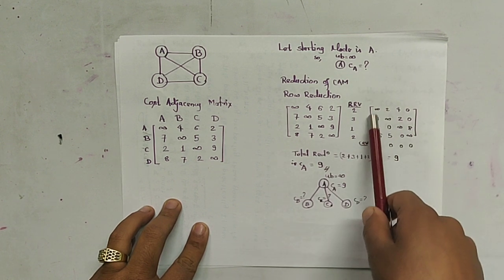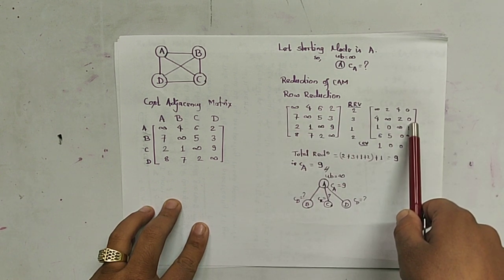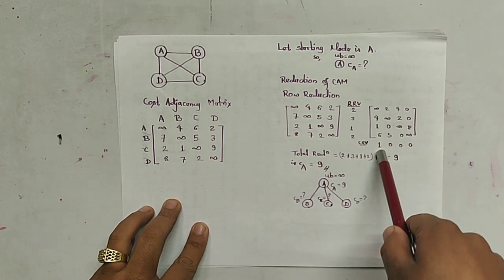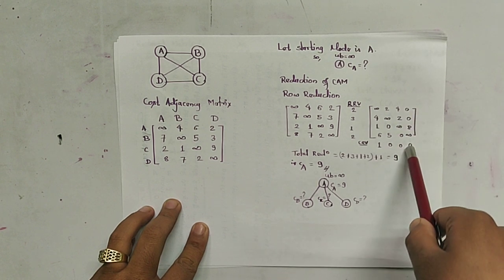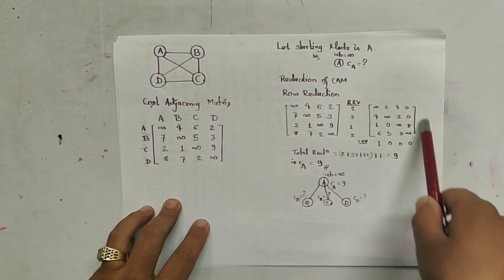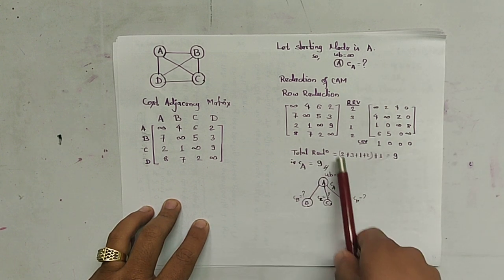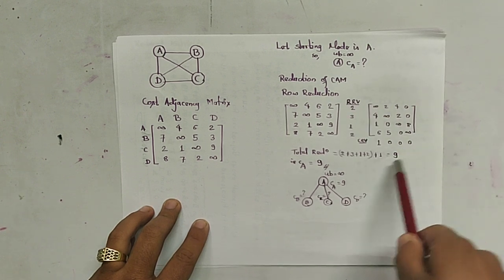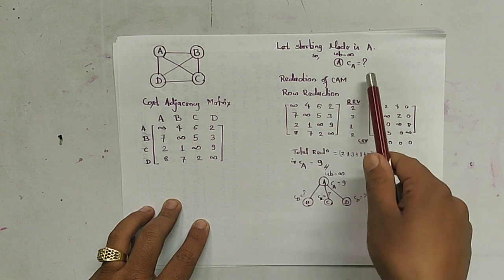After row reduction, we perform column reduction. The minimum value in the first column is 1, and the remaining columns have minimum values of 0. After subtracting these, we get the reduced cost matrix. The total reduction is total row reduction plus total column reduction, which equals 9. So the cost of node A is 9.